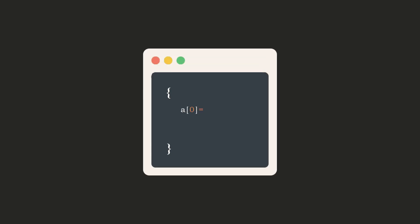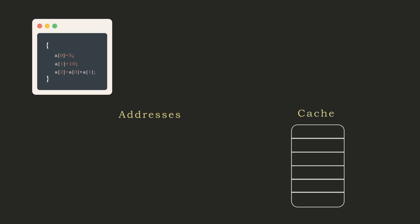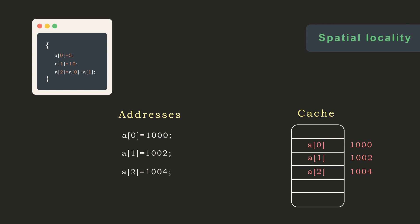This can be compared to spatial locality, where data items are related with some reference. In a structural program, instructions are executed in a sequence, so if you fill the cache with instructions whose addresses are in sequence, you are using the logic of spatial locality.